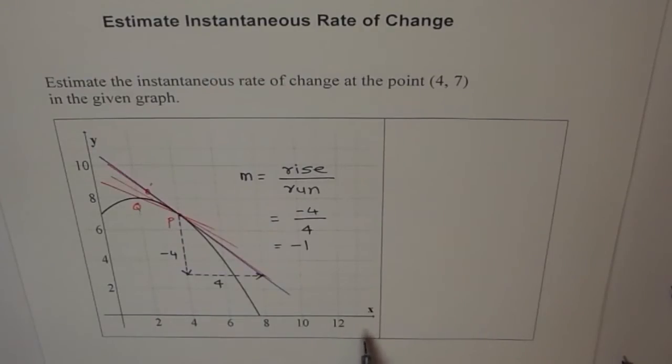Units. Well, units of X over units of Y. At times, there may be some units here. So maybe meters, time, seconds, whatever. In that case, you should write down the units also. Here we are not given any units. So that's fine. So both are in the same unit. It's just a ratio. Minus 1 is your instantaneous rate of change at (4,7). So we have successfully done this problem. This is a graphical method.